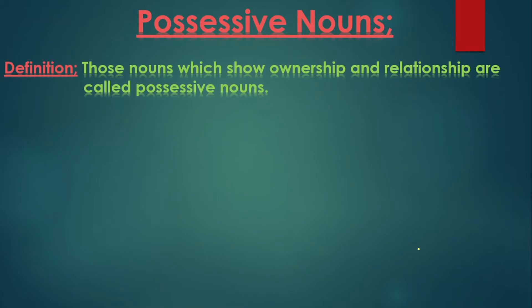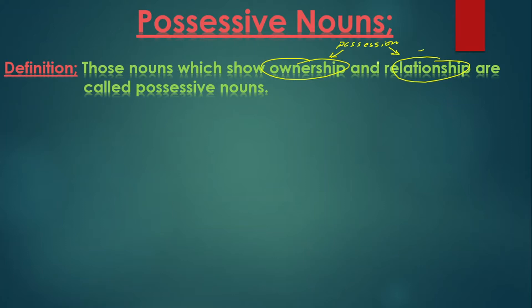Possessive noun — definition: those nouns which show ownership and relationship are called possessive nouns. Number one, it shows ownership, meaning the property; and number two, it shows the relationship, meaning the relations. Together, these are called possession. Those nouns which show ownership and relationship — simply, those which show possession — are called possessive nouns.